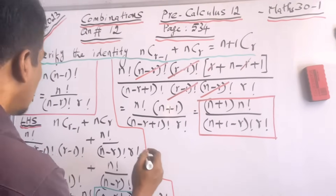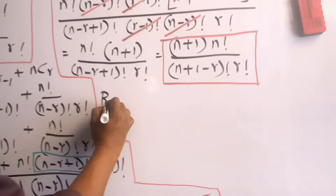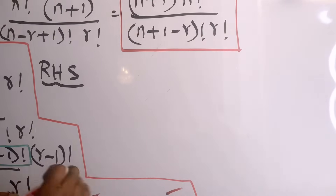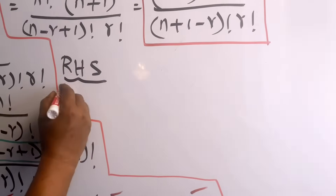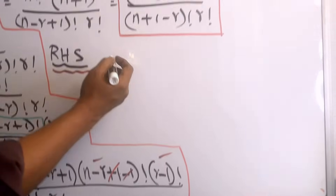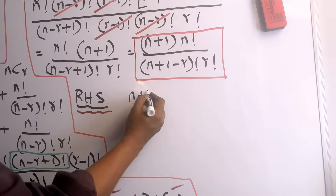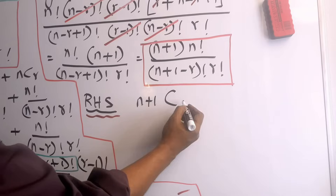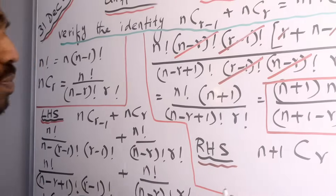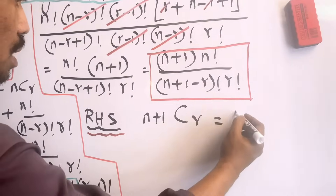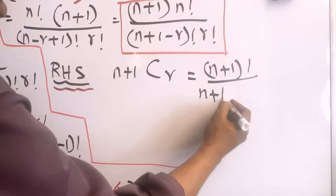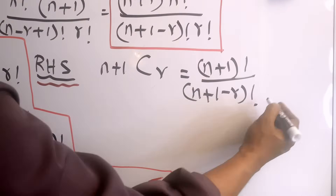The right-hand side of the identity is (n+1)Cr. Applying the combination formula, this equals (n+1) factorial over (n+1-r) factorial times r factorial.